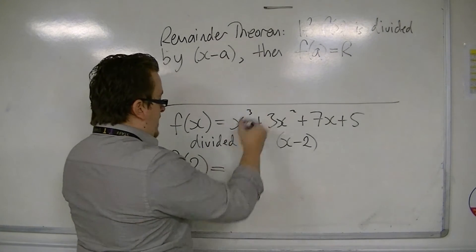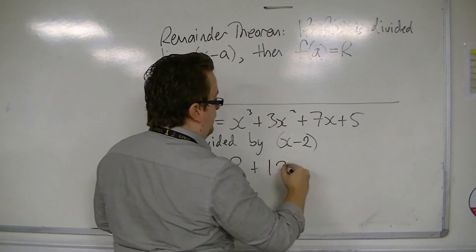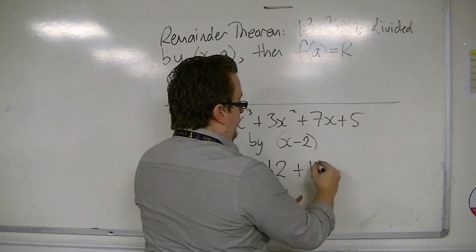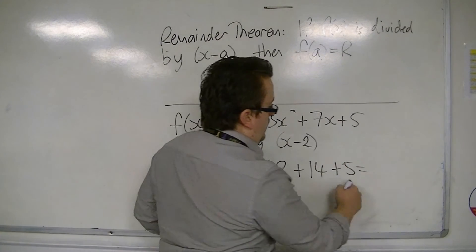Then I get 2 cubed is 8, 2 times 2 is 4, 3 times 4 is 12, plus 7 times 2 is 14, plus 5, is equal to 20, 34, 39.